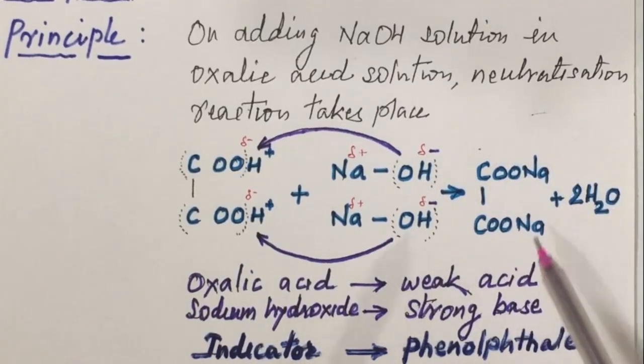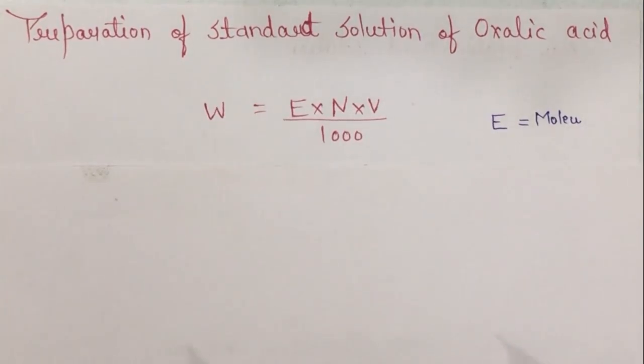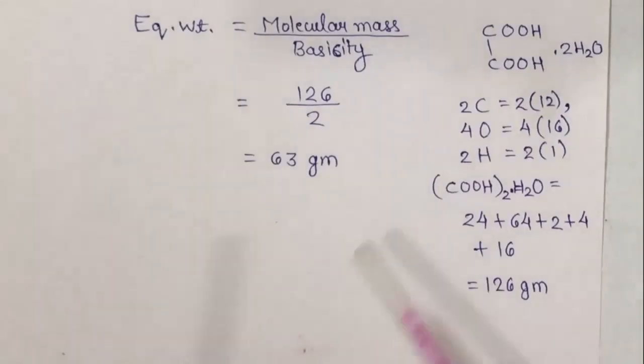For performing this titration, firstly we have to prepare standard solution of oxalic acid. The question arises: how can we prepare standard solution of oxalic acid? When we are calculating equivalent weight for powdered form, we use the formula W equals E N V upon 1000, where E is equivalent weight of substance, N is normality for which solution is to be prepared, and V is volume of solution. We know that equivalent weight equals molecular mass upon basicity.